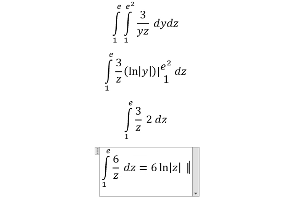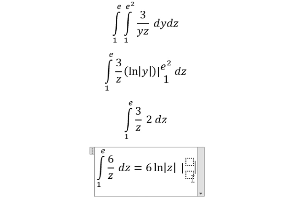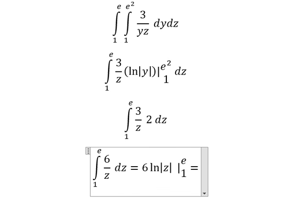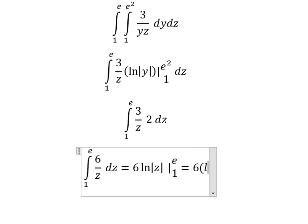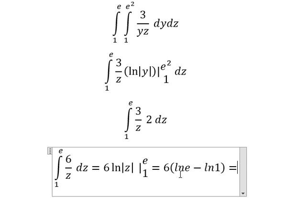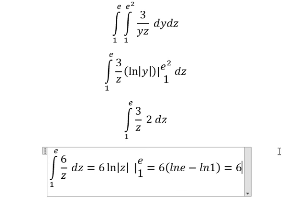From 1 to e. This one we have 1. This one we have 0. So we have 6.